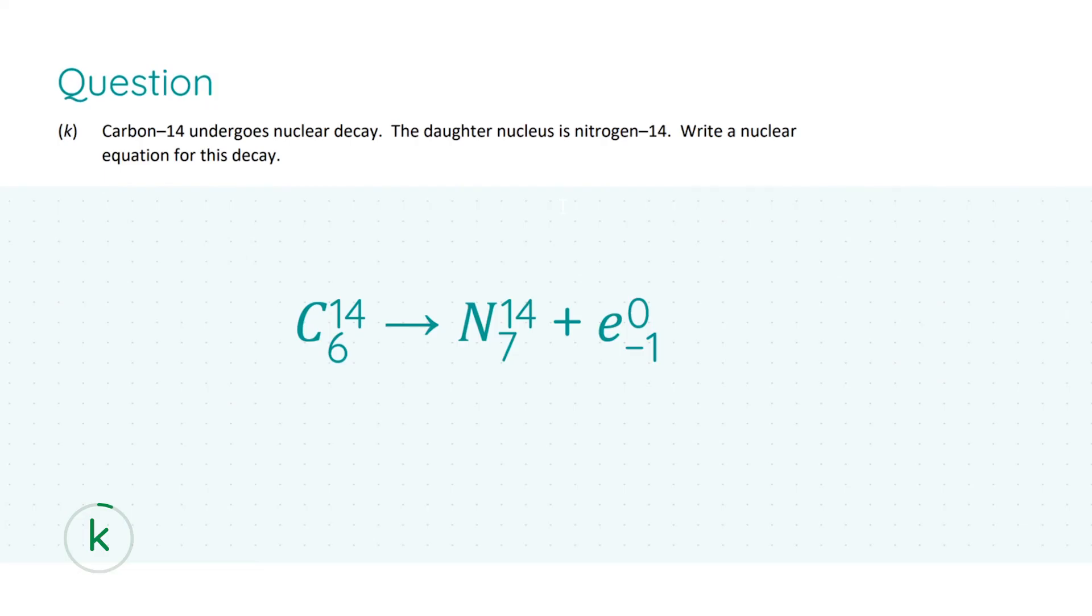In part k we are told that carbon 14, which is an isotope of carbon because carbon in the periodic table is carbon 12, so they have different numbers of neutrons. Therefore it undergoes nuclear decay. The daughter nucleus is nitrogen 14 and we're asked to write a nuclear equation for this decay.